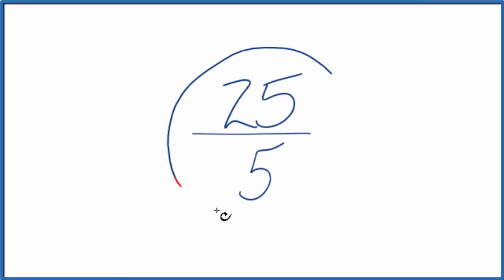Let's simplify the fraction 25 fifths. So what we're doing, we want to find another fraction that's equivalent to 25 over 5. It has the same value, just that we reduced it or simplified it to its lowest terms.